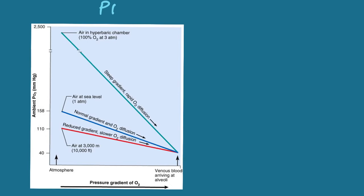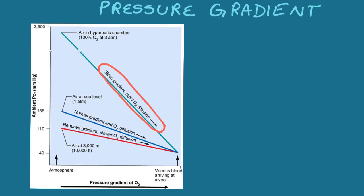When the pressure gradient increases, the speed of diffusion also increases. So greater the pressure gradient, the faster the speed of diffusion. So let's take a look at this graph here. The one with the highest gradient is the steepest gradient that you see here. And that is air coming from a hyperbaric chamber at three atmospheres. It's three times the atmospheric pressure. So this obviously increases the speed of diffusion.